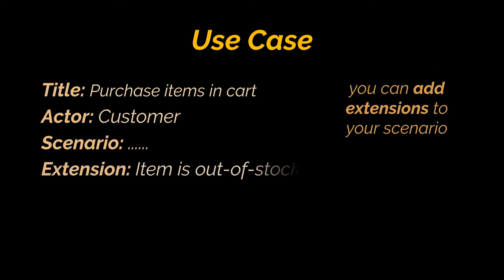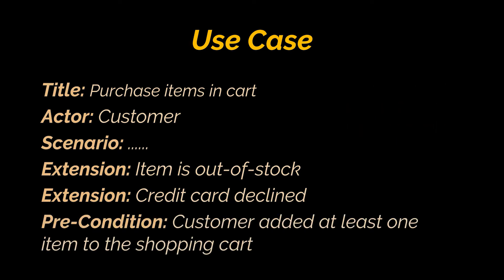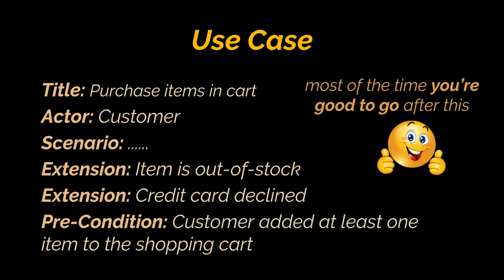Depending on the situation, you can add extensions to your success scenario steps for alternative flows — like what happens when items are out of stock — or for when things go wrong, like payment problems. You can also add more specific details such as a precondition: what must be true to begin this use case. For example, a precondition might be that the customer has added at least one item to the shopping cart — that's the only way this use case makes sense.